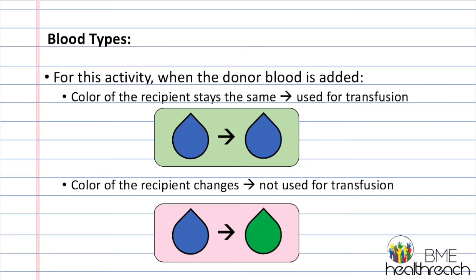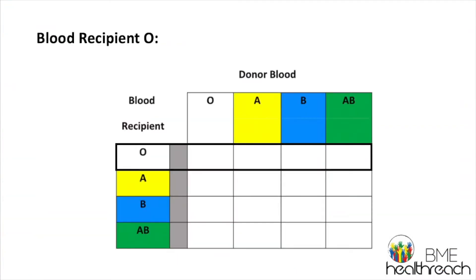When the donor blood is added, if the color of the recipient stays the same, then the bloods can be used for transfusion. If the color of the recipient changes, then the bloods cannot be used for transfusion. We're going to mark these on our blood chart as we go through the activity.